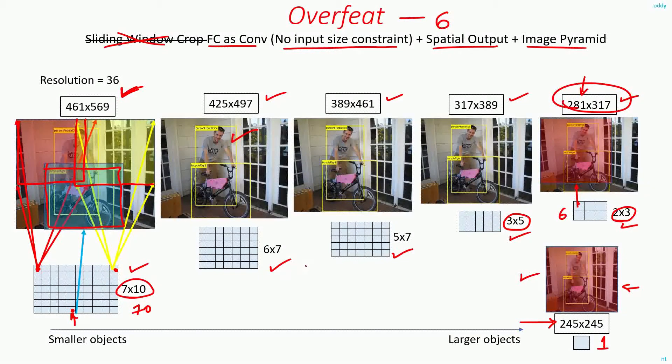So this way, in OverFeat, by using images of these scales and the image pyramid of six different sizes, they are able to detect many objects at different locations and of different sizes.